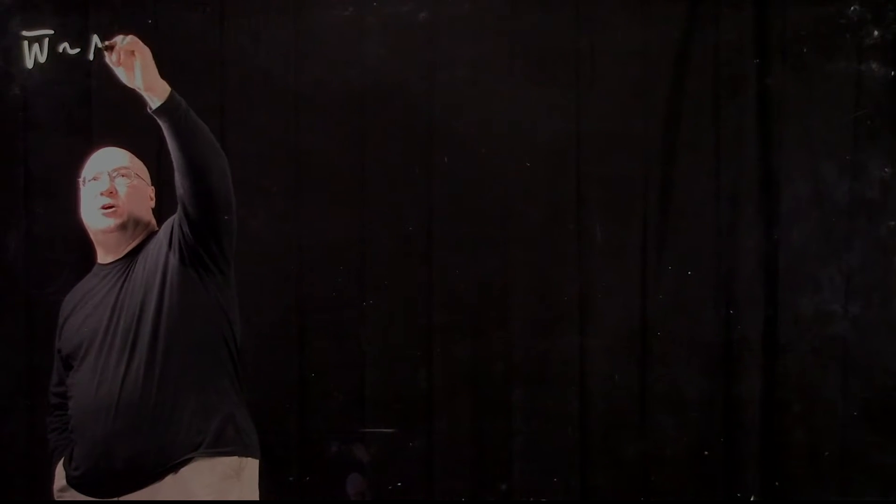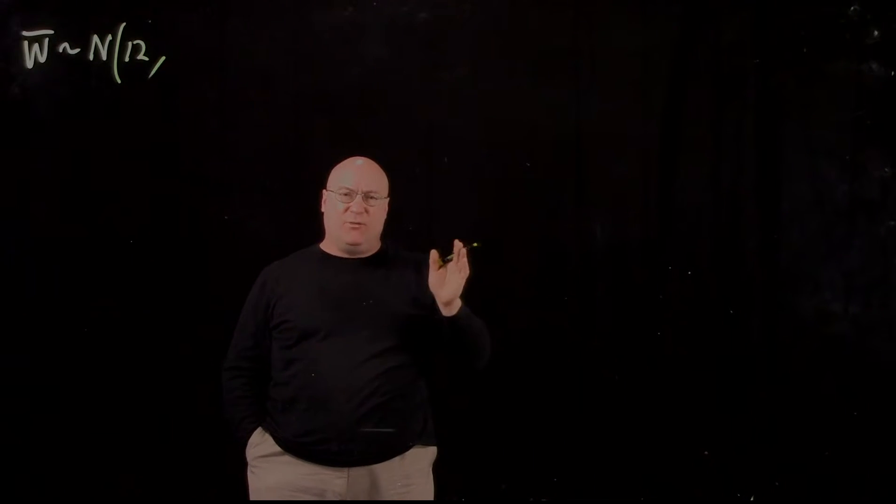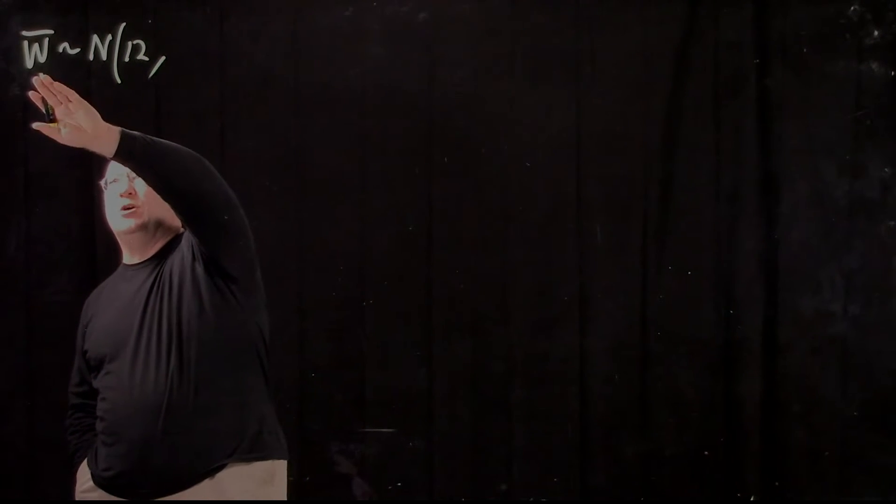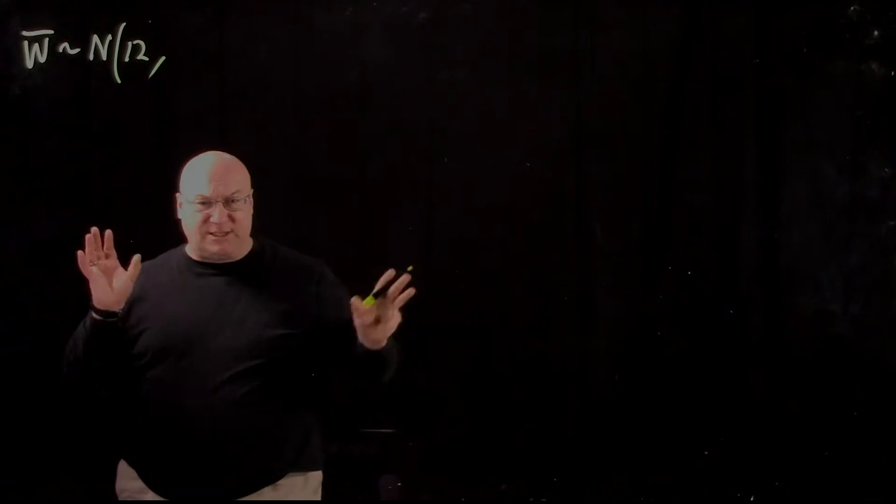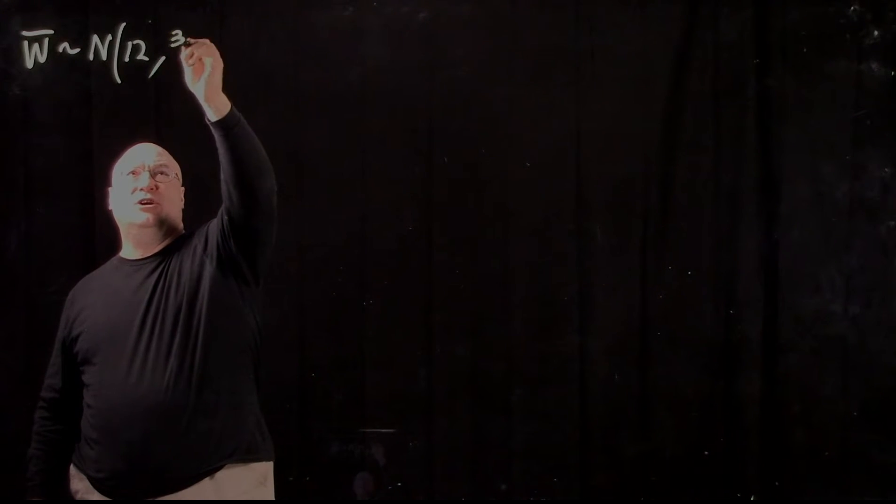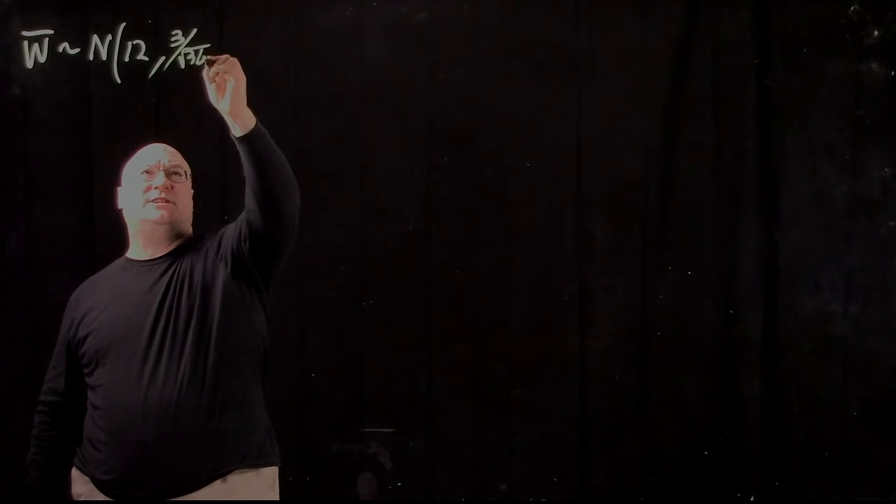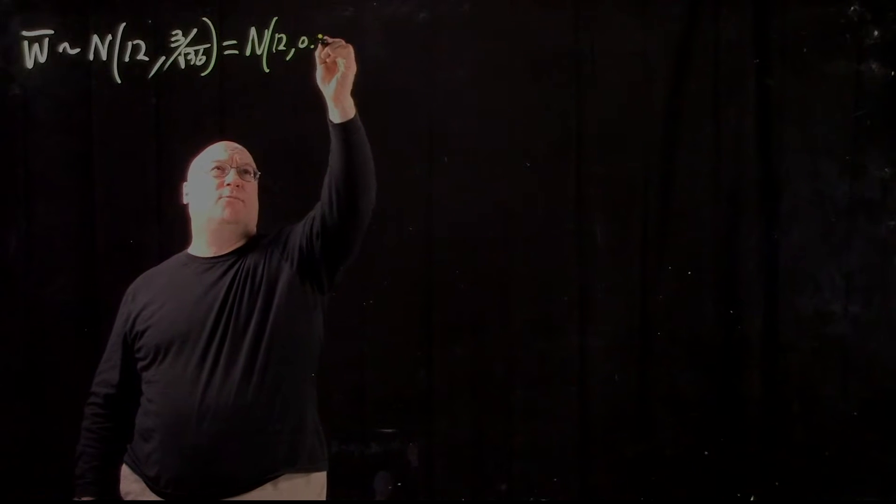So the first thing we notice is that we'll assume W bar is normal with mean 12. We're thinking that it didn't change, and we're going to ask ourselves, do we get an unusual value for W bar? The random variable that represents the probability distribution of all possible samples of this size is normal with mean 12, standard deviation 3 over the square root of 36, which is normal with mean 12, standard deviation 0.5.